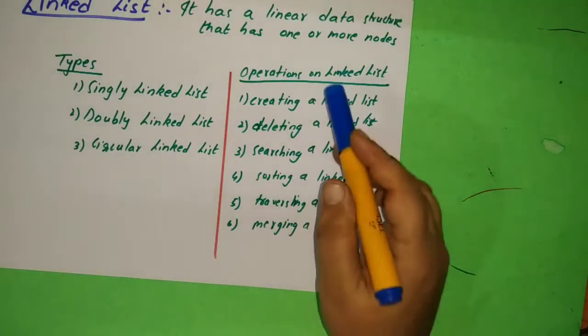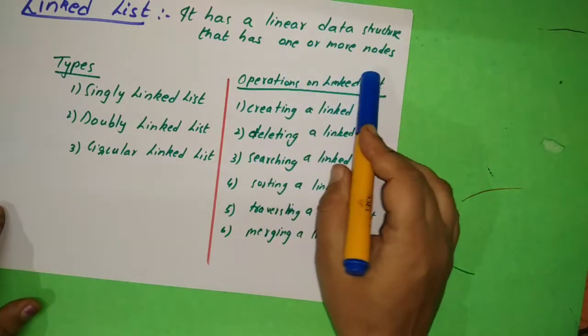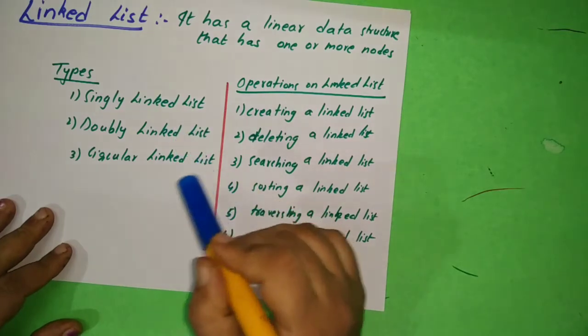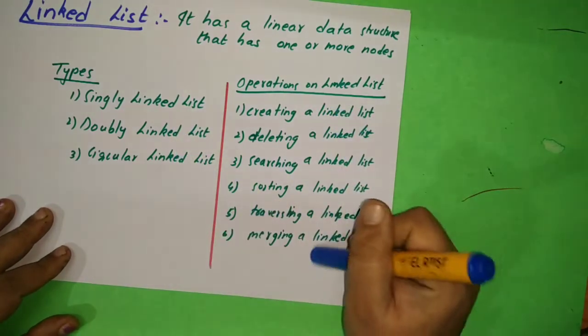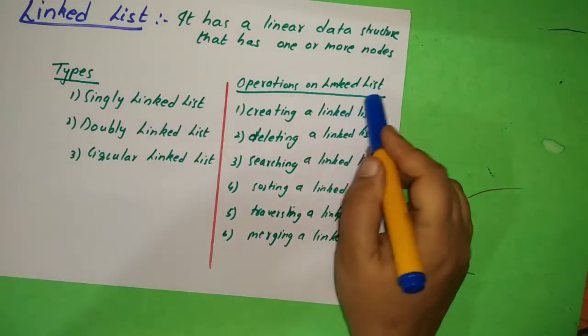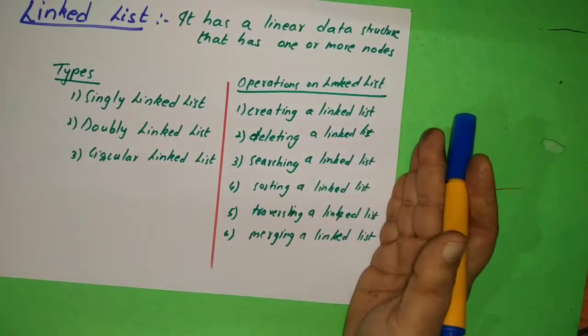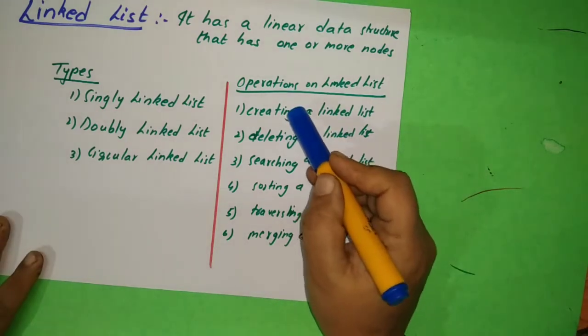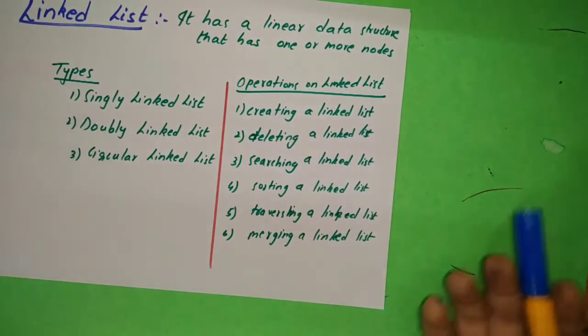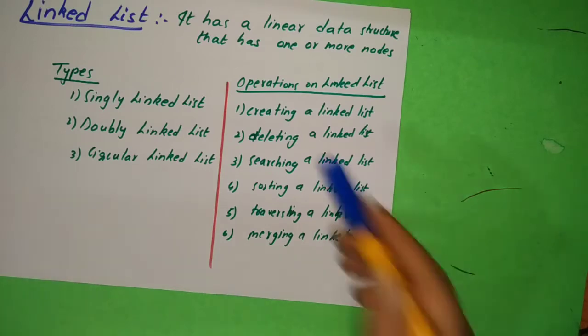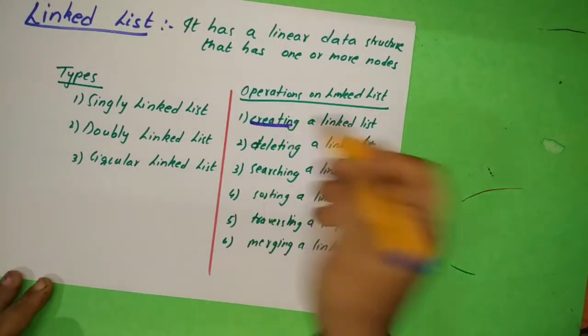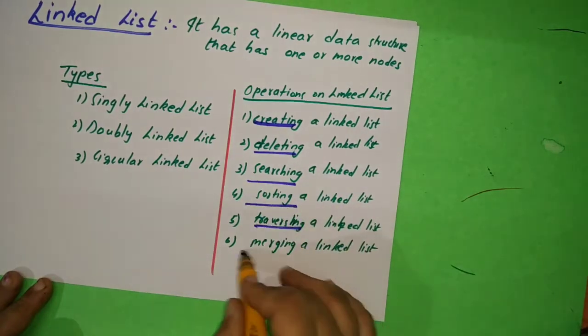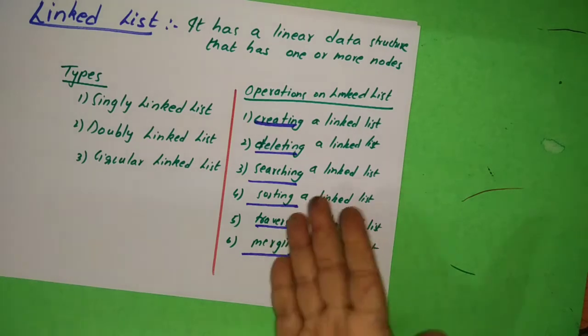Then we have linked list. Linked list has a linear data structure that has one or more nodes. Types of linked list is single linked list, doubly linked list, and circular linked list. This time this was asked: creation operations on linked list. This same as your data structures - normal primitive data structures, non-primitive data structures. You should remember these words: creating a linked list, what can you do with these data structures? Only you can do these operations. Please remember these words: creating linked lists, deleting linked lists, searching, sorting, traversing, and merging.